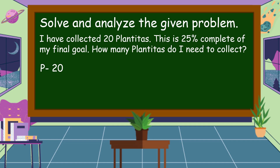And how about 25%? 25% is the rate, or the percent rate. We're going to change percent to decimal form. Just move the decimal point from the right going to the left two decimal places and put the decimal point. So 25% is equal to 25 hundredths. In our problem, we are finding for the base or the total.